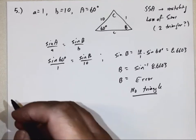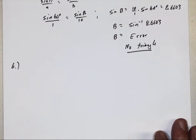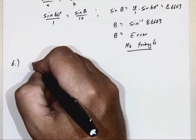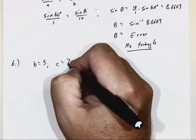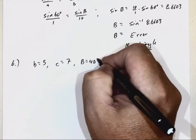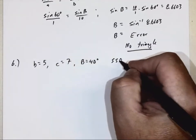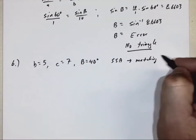Alright, on to problem six. Another triangle. Let me just write down. Once again, they don't draw a picture, but they say side B is 5, side C is 7, angle B is 40. Once again, it looks like we have two sides and an angle, and it's matching.